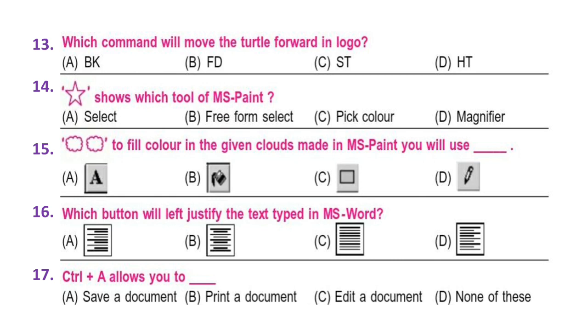Question 14: Star shows which tool of MS Paint? A. Select, B. Free form, C. Pick color, or D. Magnifier. Question 15: To fill color in the given clouds made in MS Paint you will use what? Options are given here. What will you use to fill the color in these clouds? Select the correct option.